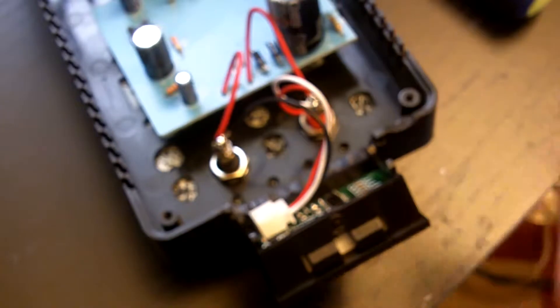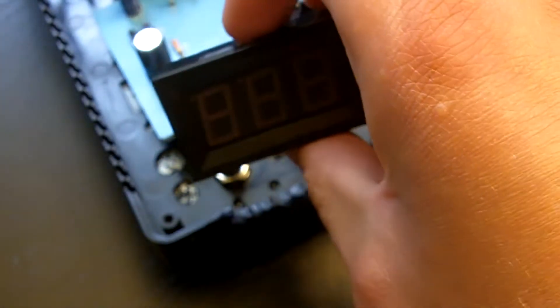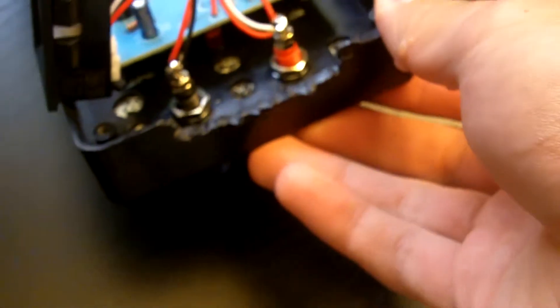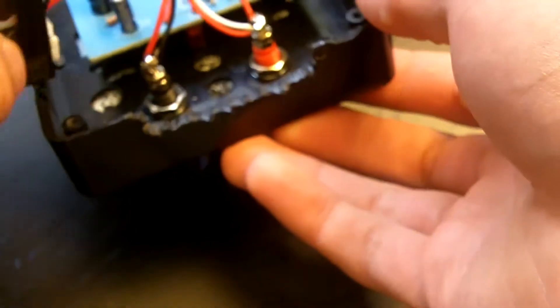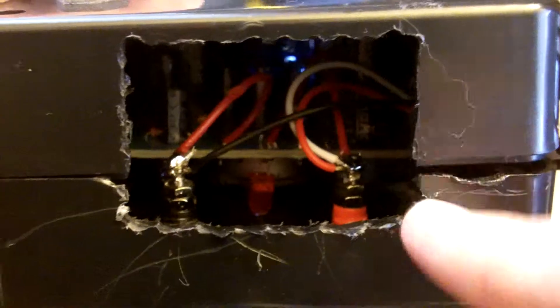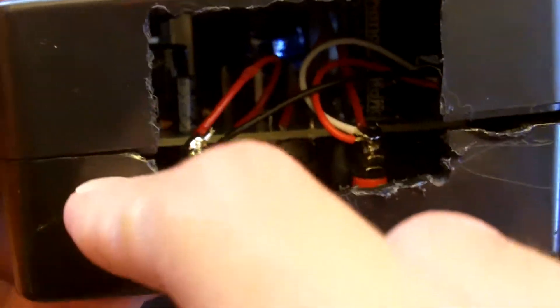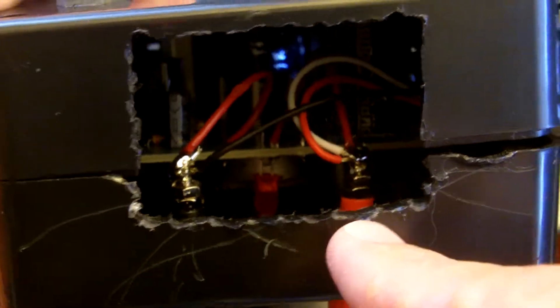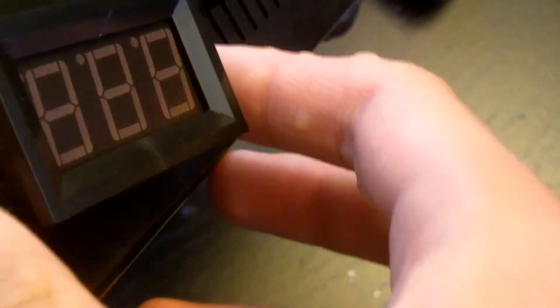The hardest thing about this modification really is just getting the hole drilled out to the right size. You've got to measure the dimensions of the digital voltage panel meter and then mark them on the back of the case. As you can see when I put the case together, the hole is actually a bit bigger than the digital voltage panel meter itself. That's because the digital voltage panel meter has these little plastic edges all around it. They actually go out a little bit, probably maybe two millimeters out from the actual digital voltage panel meter, and these cover up the hole itself. So you can't see any of the hole, you just see the digital voltage panel meter.